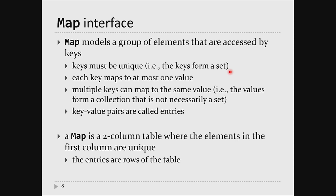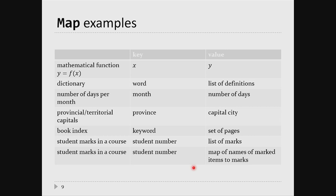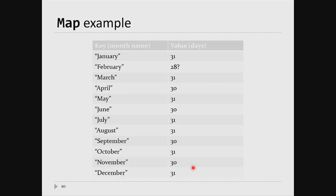A key and its associated value is called an entry. It's much easier to think of a map as just a two-column table. Elements in the first column are unique and not necessarily sorted. The entries are just the rows of the table. For example, my keys are the names of the months — all unique, only 12. The values are the number of days in each month. So you have a two-column table mapping month name to number of days.